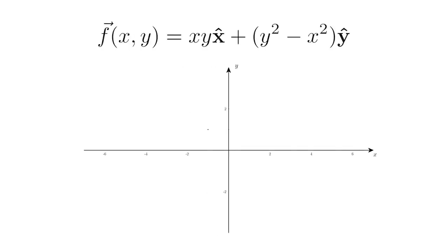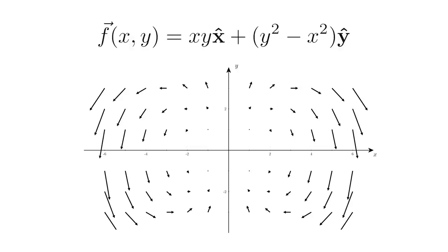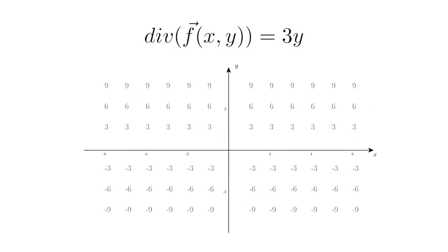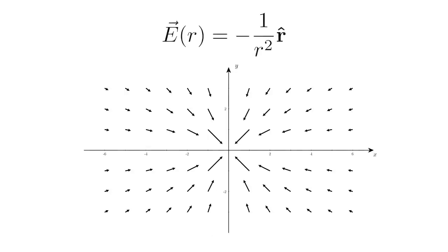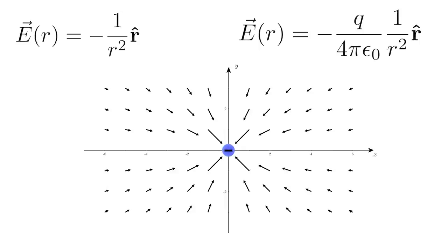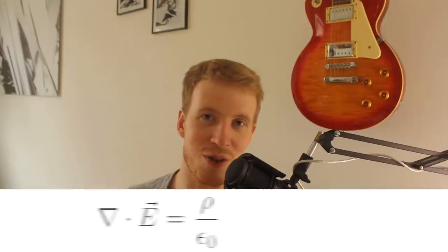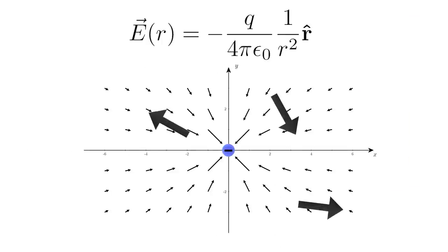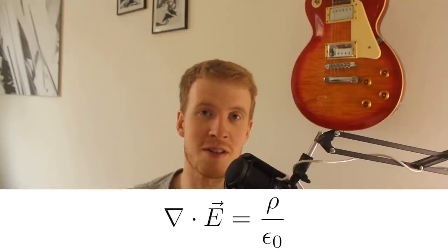Taking the divergence of the first field gives a particular equation, and when you plug in the numbers you get its divergence. For the one-over-r-squared field something special happens — the divergence is zero everywhere. This is how charges behave: this equation represents an electric field of a charge, and everywhere we don't have a charge the divergence is zero.